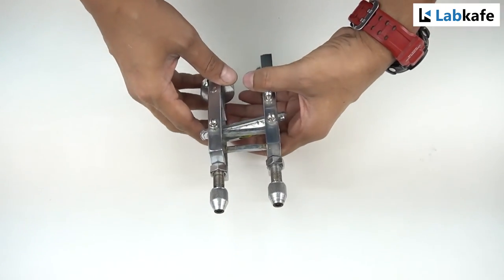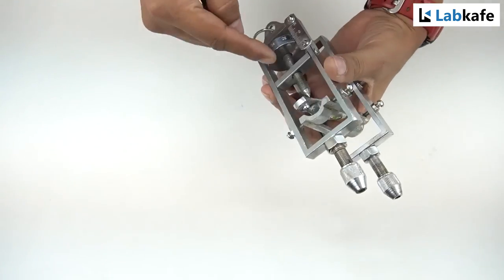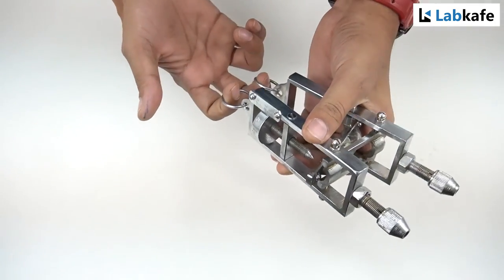Before we proceed further, let's have a close look at Searle's apparatus and calculate some essential parameters for the experiment. This is the Searle's apparatus. It has two frames, two torsion screws, spherometer, spirit level and two hangers.